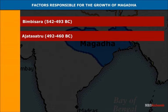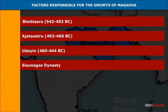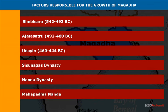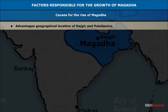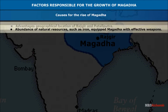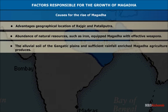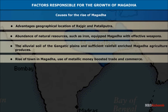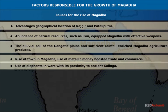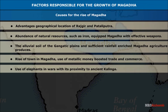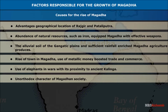Major dynasties of Magadha: Haryanka kings — Bimbisara (542–493 BC), his son Ajatashatru (492–460 BC), his successor Udayin (460–444 BC). These were followed by the Shishunaga dynasty and then the mighty Nanda dynasty, especially Mahapadmananda, who proclaimed himself the sole sovereign of the region. Causes for the rise of Magadha include its advantageous geographical location, abundance of natural resources like iron, fertile alluvial soil, sufficient rainfall, use of metallic money, and use of elephants in wars.